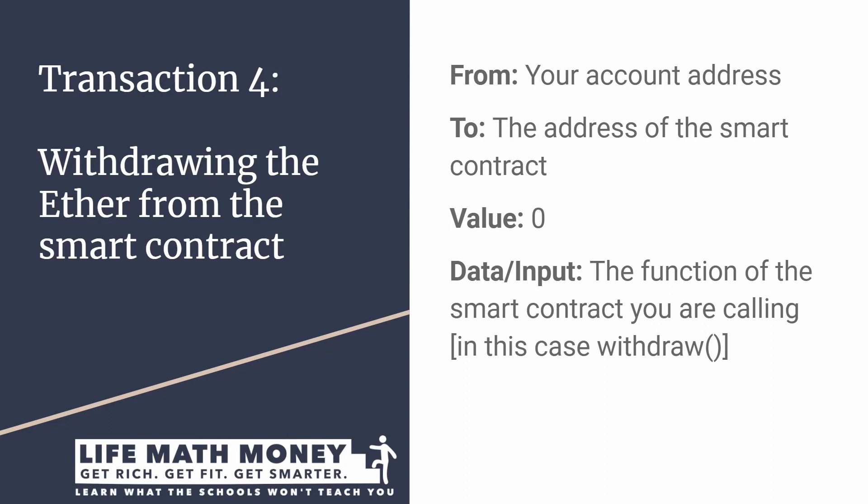The final transaction is withdrawing the Ether from the smart contract. After one year, you send a transaction calling the smart contract. The smart contract runs its code, checks whether a year has passed, and if it has, transfers its entire balance to your account. The 'from' is your address, 'to' is the smart contract's address, 'value' is zero since you're not sending Ether to it, and the data input specifies the withdraw function. After this transaction is included in the blockchain, the state updates: your balance increases and the contract's balance goes to zero. The contract code and data will exist in the blockchain forever even though you are done using it.